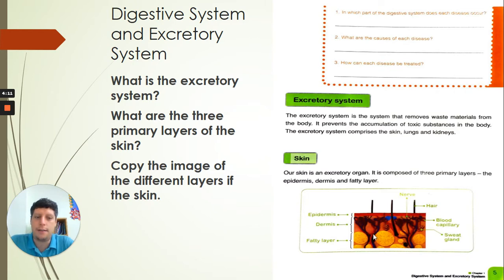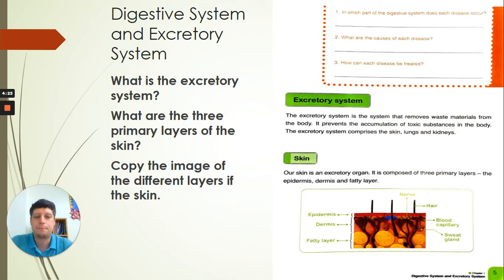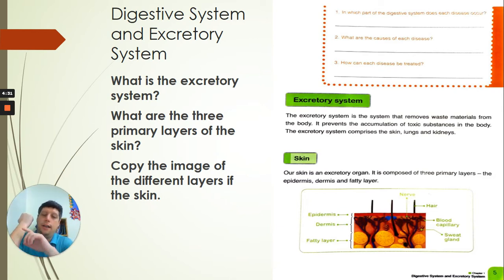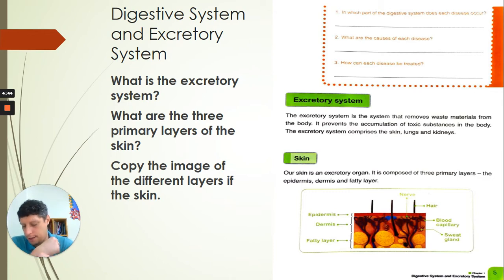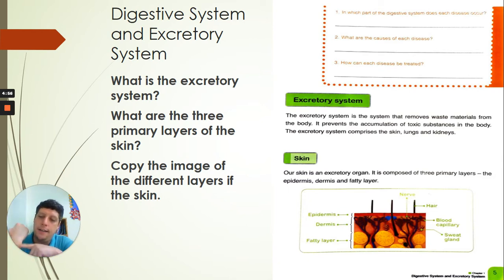Let's have a look at the image of our skin. This is what the layer of skin looks like — it's broken up into three different parts, three different layers making one whole piece of skin. The top part is the epidermis, and you can see hair coming through it. Underneath the epidermis, you have the dermis, which is the middle layer. Below that, you have the fatty layer.